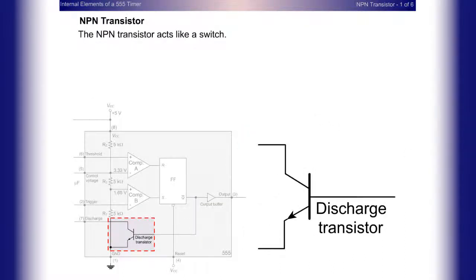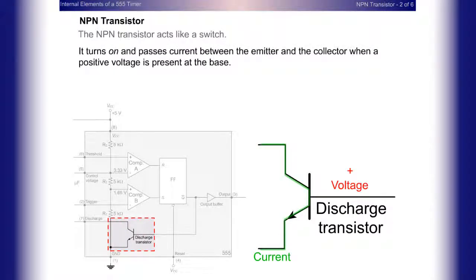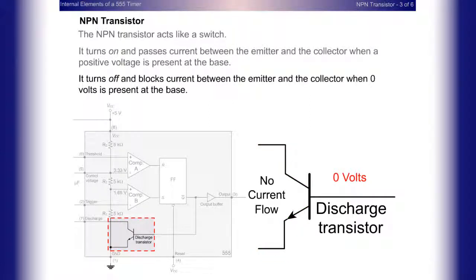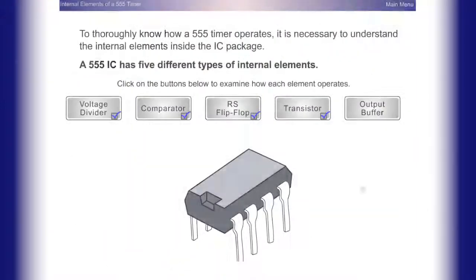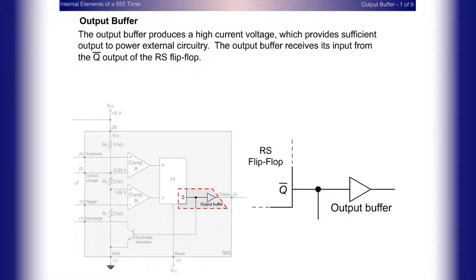NPN transistor: The NPN transistor acts like a switch. It turns on and passes current between the emitter and the collector when a positive voltage is present at the base. It turns off and blocks current between the emitter and the collector when zero volts is present at the base. The voltage applied to the base comes from the Q output of the RS flip-flop.